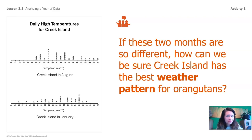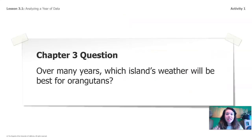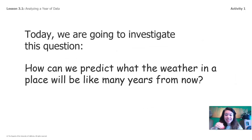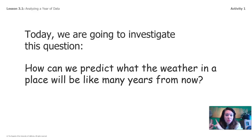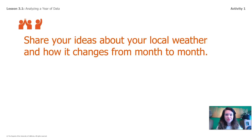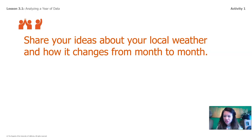I think we need more data. During Chapter 3, we're going to be answering this question: over many years, which island's weather will be best for orangutans? And today in this lesson, we're going to investigate this question: how can we predict what the weather in a place will be like many years from now? I want you to think about your ideas about your local weather, wherever you live. How does it change from month to month? What is it like during the different seasons?